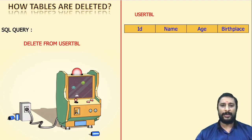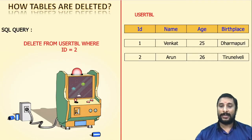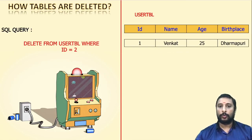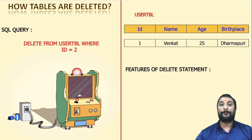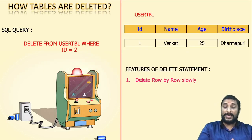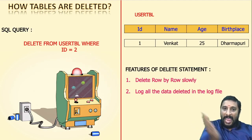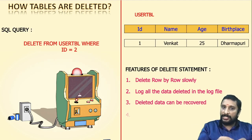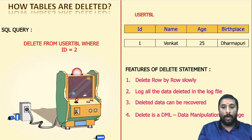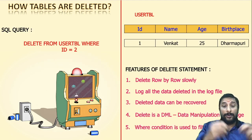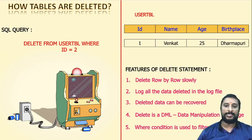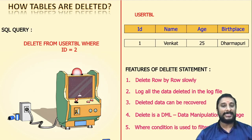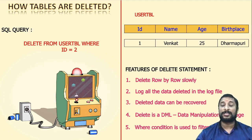If I don't want to delete the entire data, I can add a WHERE condition — for example, WHERE id equals 2 — and it will remove only that particular row. The DELETE statement works by deleting each and every row one by one, and it logs all the deleted data into your log file so that the data can be recovered if it is accidentally deleted. Since it works on the data, it is called a DML statement, and you can have a WHERE condition to filter which data you want to delete.